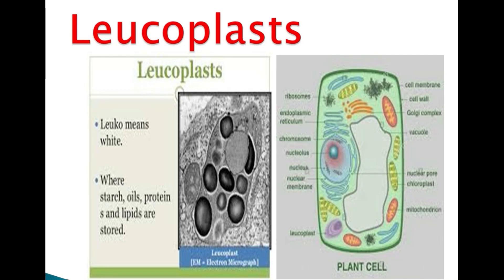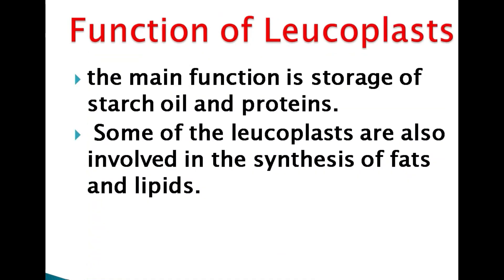This is the structure of the leucoplast. You can see that leucoplasts are white in appearance, and starch, protein, and lipid are stored within them. The storage function is the primary role of leucoplast.